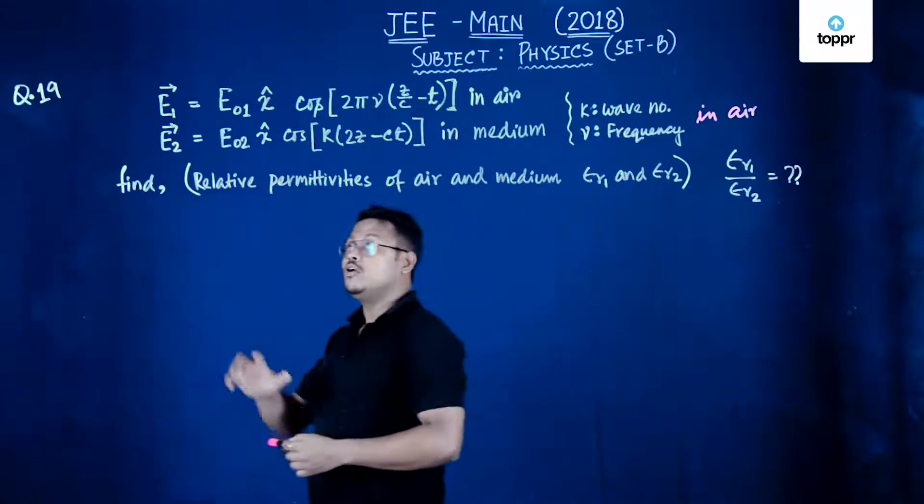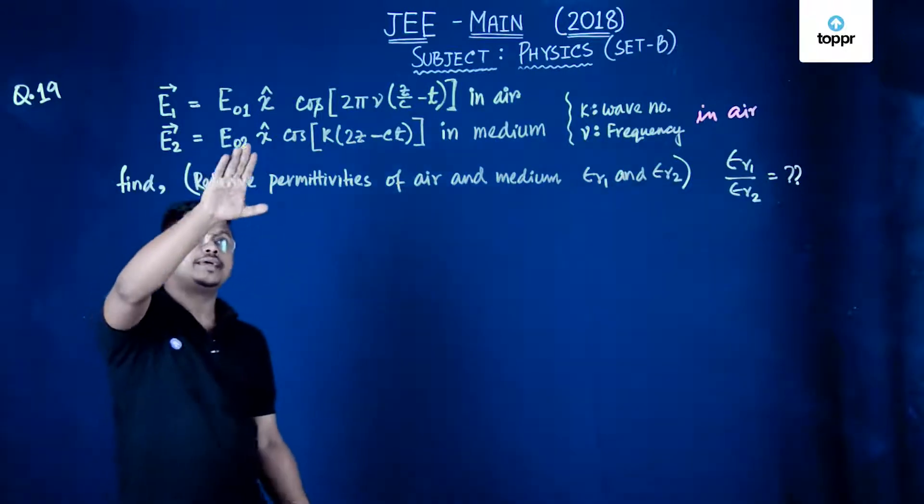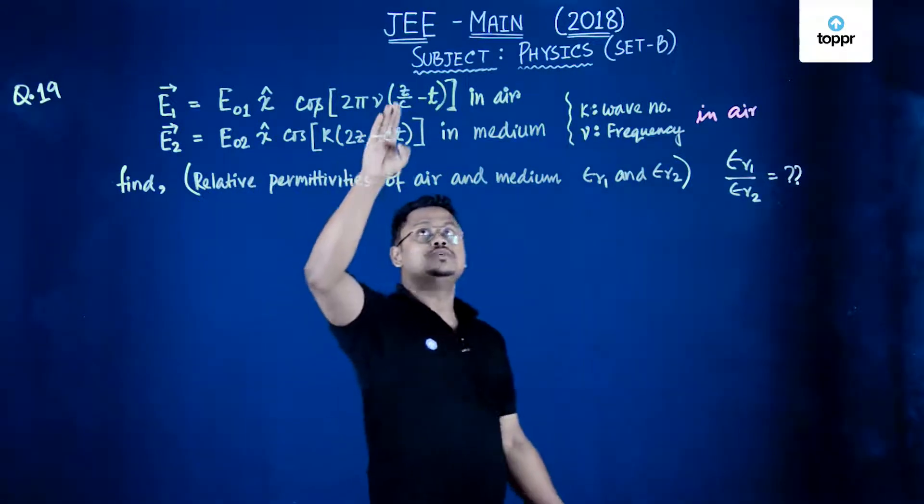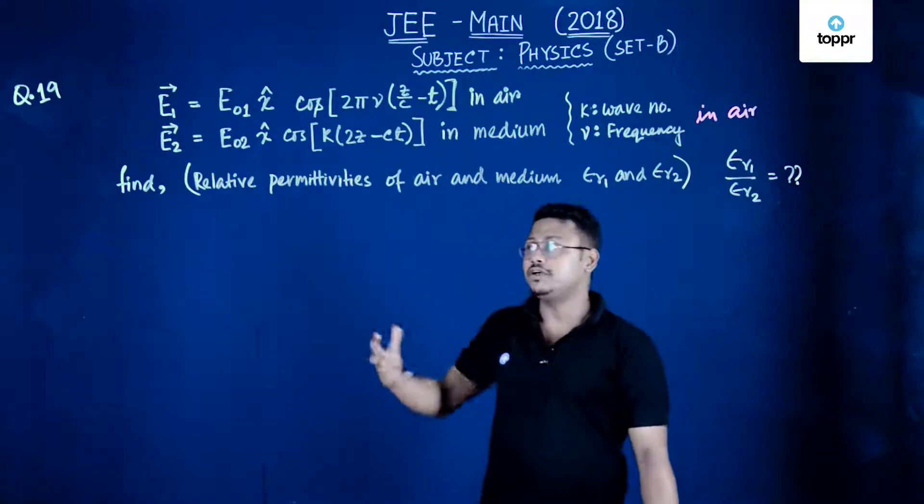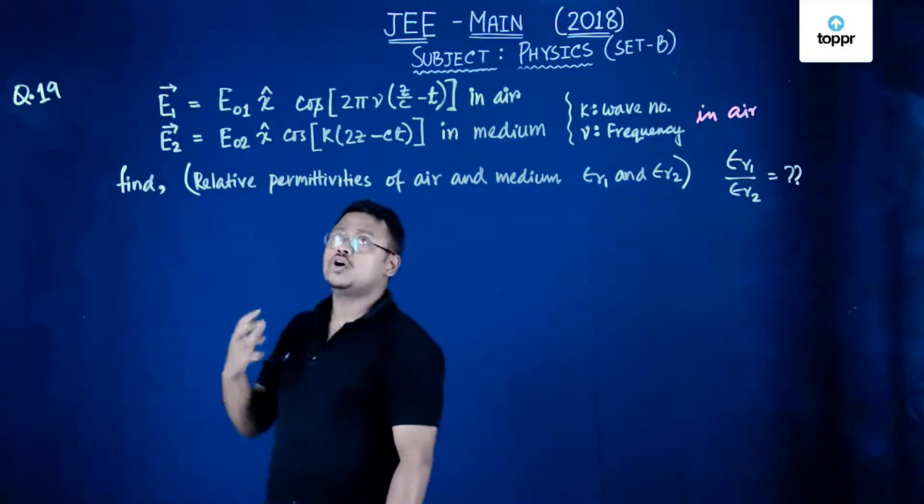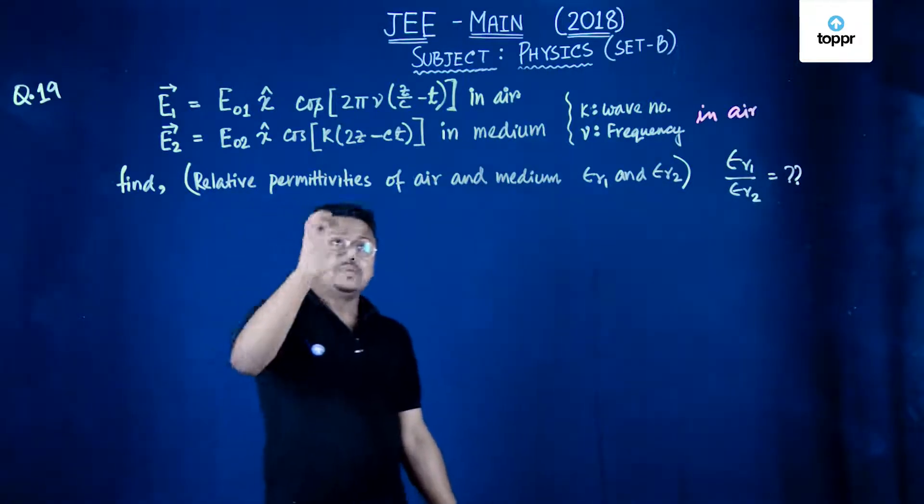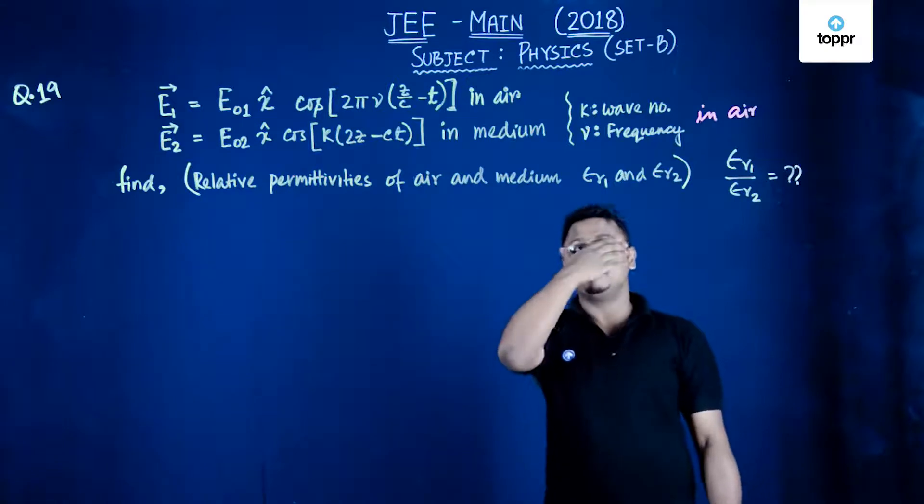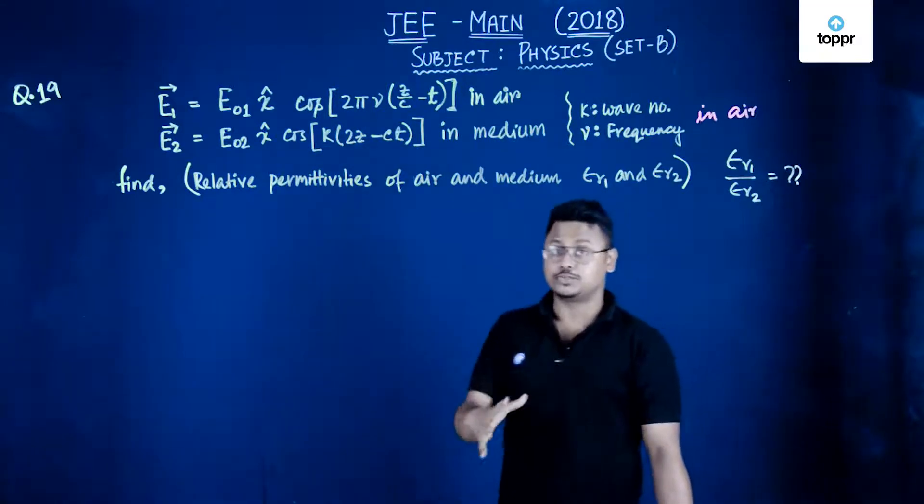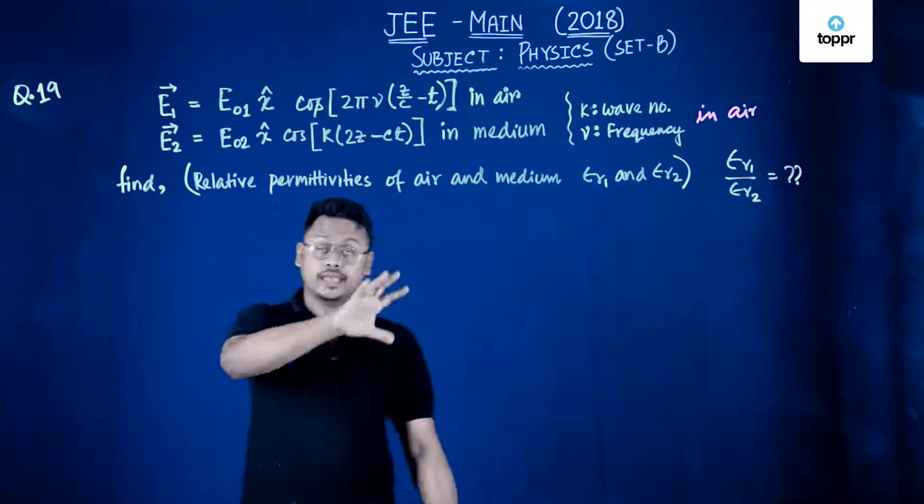The two waves are given in the form of e1 equals to e0 1 x cap cos 2 pi mu z by c minus t and this wave is in air and another wave is e0 2 x cap cos k 2 z minus t in medium. And it's given that k is the wave number and mu is frequency corresponding or referring the wave in air.